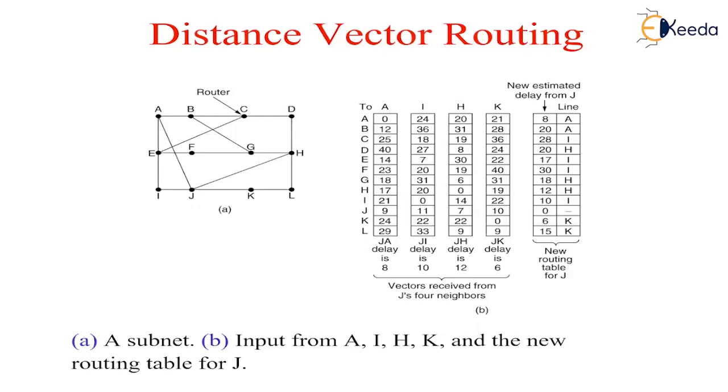Distance vector routing algorithm operates by having each router maintain a table, that is a vector table, giving the best-known distance to each destination and which line to use to get there. These tables are updated by exchanging information with the neighbors. A distance vector routing algorithm is sometimes called by other names, most commonly the Bellman-Ford routing algorithm or Ford-Fulkerson algorithm.